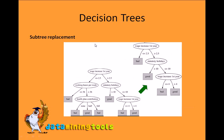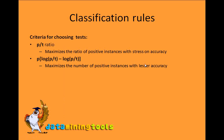In subtree replacement, looking at this tree — our original tree versus the tree after subtree replacement — the complete node 'working hours per week' has been replaced with a leaf node 'BAT'. This is an example of subtree replacement.